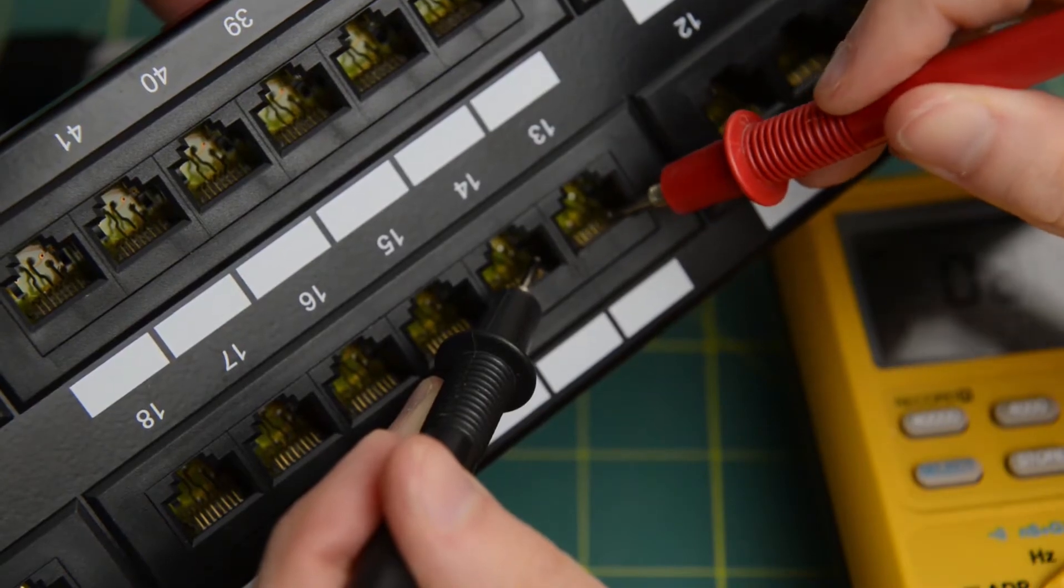After we wired the back of the patch panel, we made sure all the grounds were together and all the power was together. And we did this by doing a continuity check and we would swipe across the pins on the front.